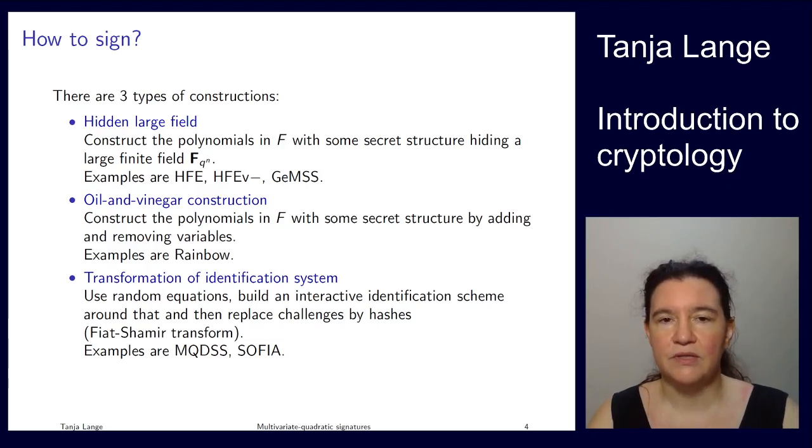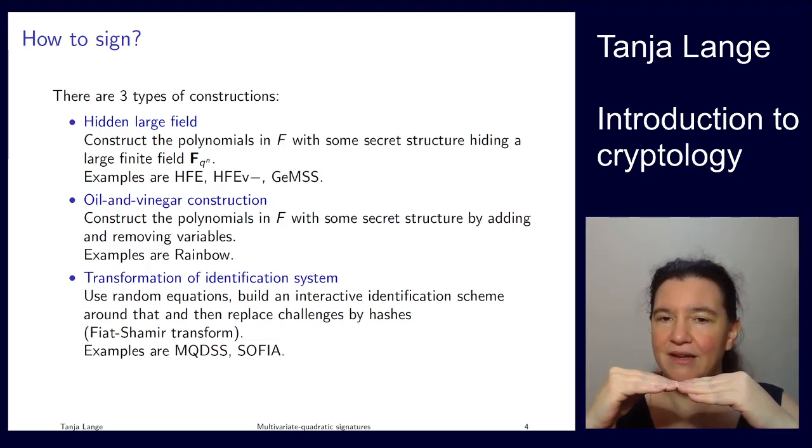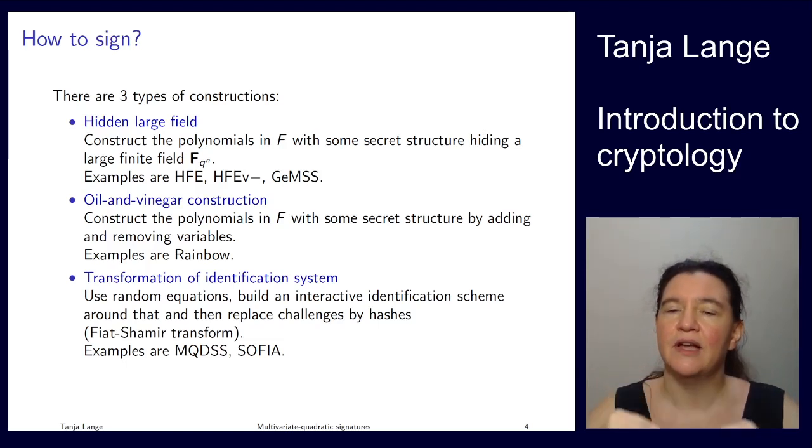So the top two families are kind of having a hidden structure in how the system of equations f is constructed. So in those cases f has either some underlying structure which comes from basically inside this linear system of equations. You are packing a function which is defined over an extension field of Fq of this degree n that the number of variables corresponds to. And I am going to have another lecture on that one.